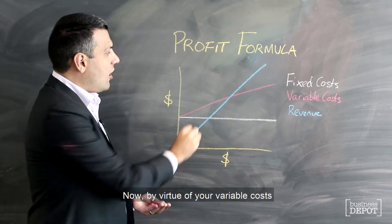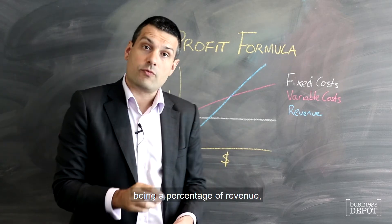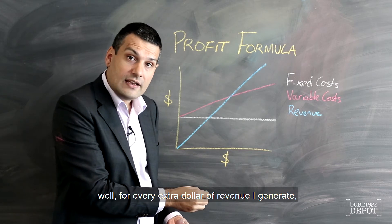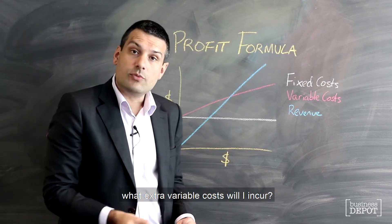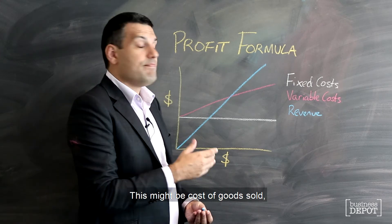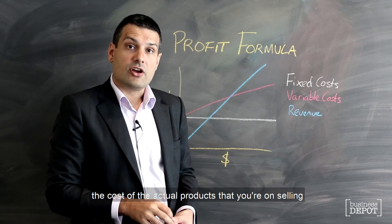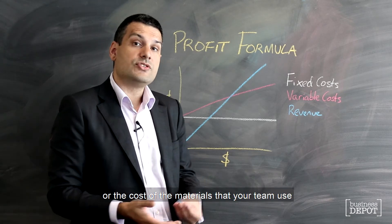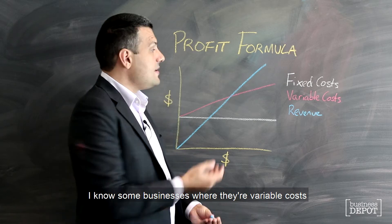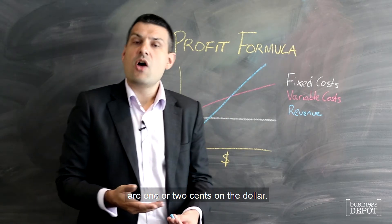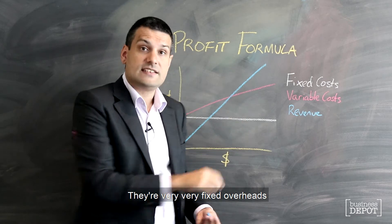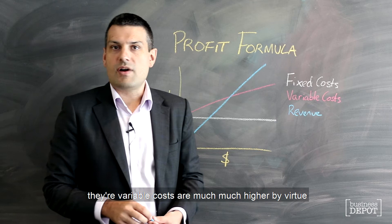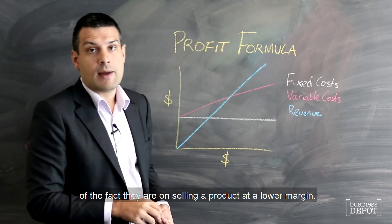By virtue of your variable costs being a percentage of revenue, you can start to calculate: for every extra dollar of revenue I generate, what extra variable costs will I incur? This might be the cost of goods sold, the cost of the actual products that you're on-selling, or the cost of the materials that your team use when delivering those services. I know some businesses where their variable costs are one or two cents on the dollar — very fixed overheads — and I know some businesses where their variable costs are much higher by virtue of the fact that they are on-selling a product at a low margin.